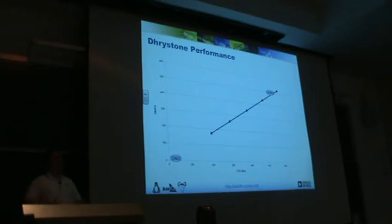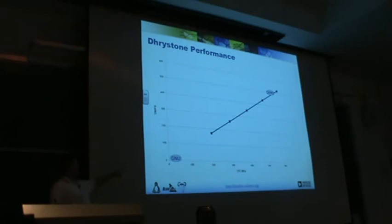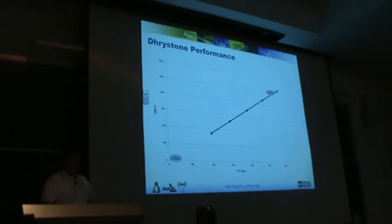Whereas when we take that same benchmark and run it in the GNU simulator, it scores much, much lower. And again, most of that is because of dynamic translation — QEMU gets this huge performance improvement from it.